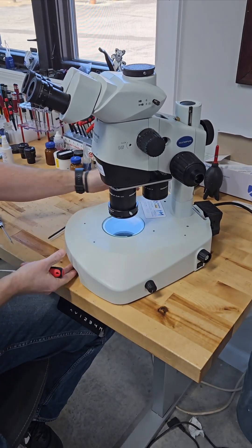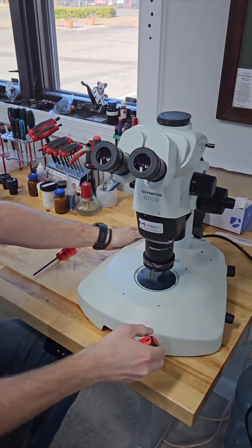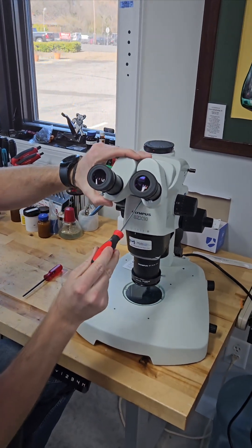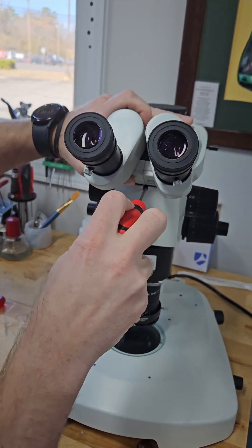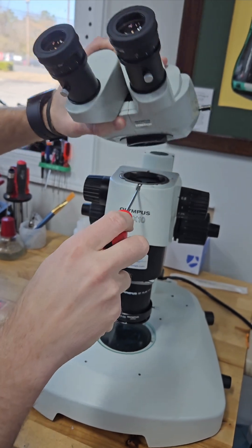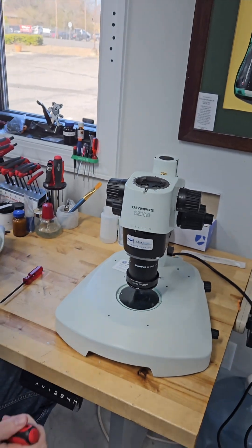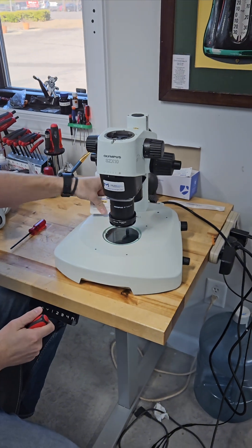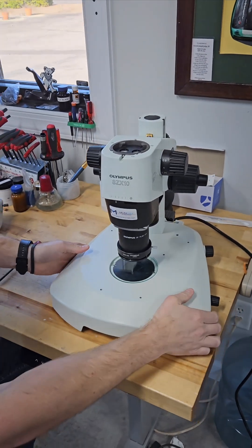And then we're going to take the head off. It's going to be right here in between the binocular body. Three millimeter Allen wrench, and that's going to come off. We're going to set that to the side just for right now, and then we're going to move on to the next part.